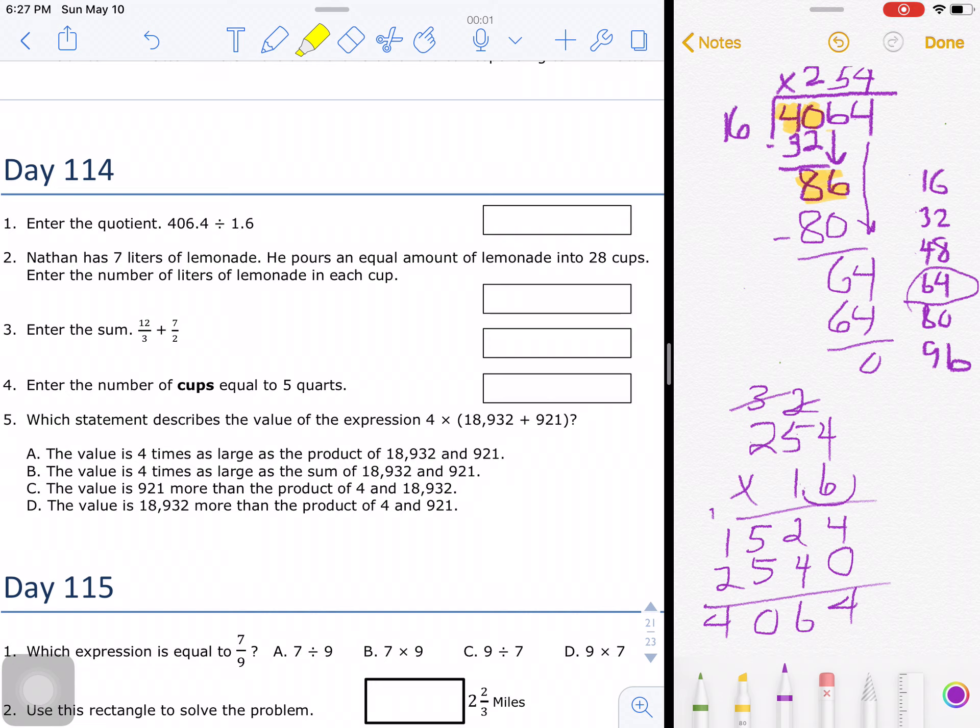Now this says 4,064, but remember this is tenths. So I'm going to drop it down and come back to give us tenths again. So I have 406.4 tenths, which is what my original dividend was. So my quotient of 254 is accurate.